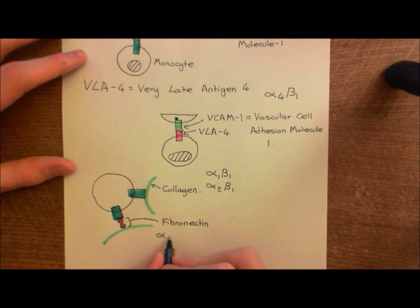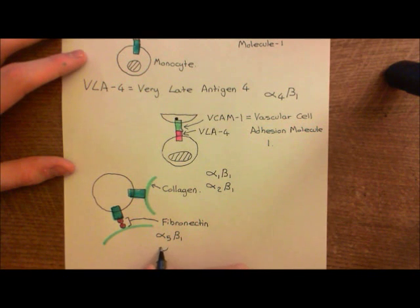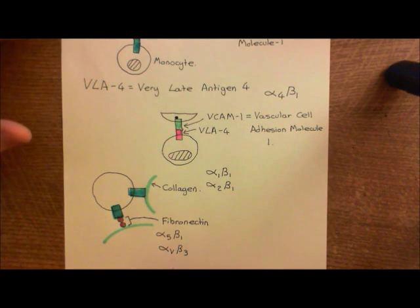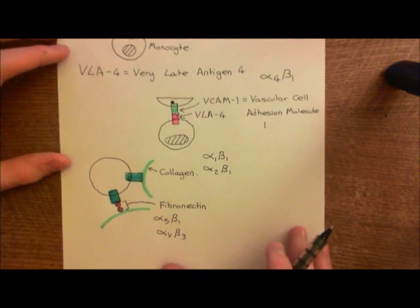Well, there is the alpha 5 beta 1 integrin, and there is also an integrin known as the alpha V beta 3 integrin. We use the alpha V alpha subunit and the beta 3 beta subunit.